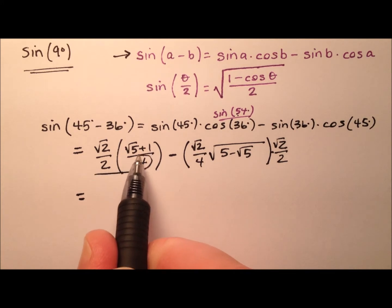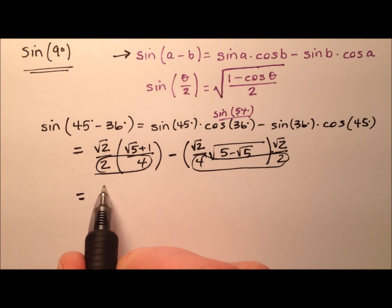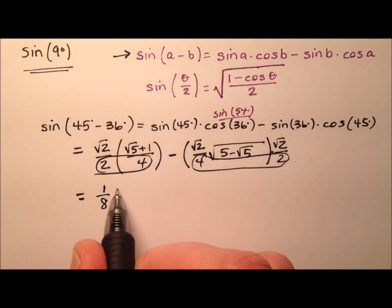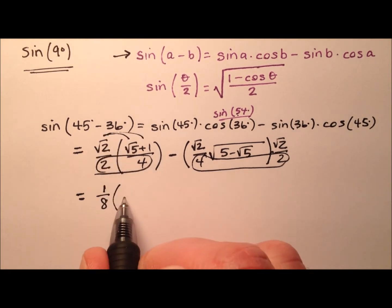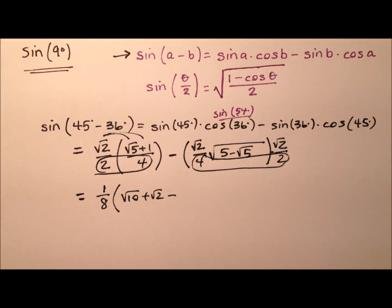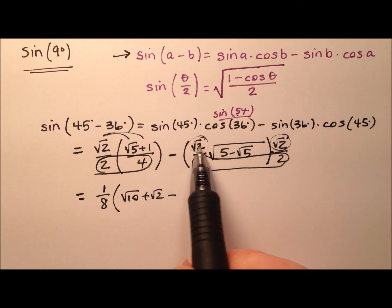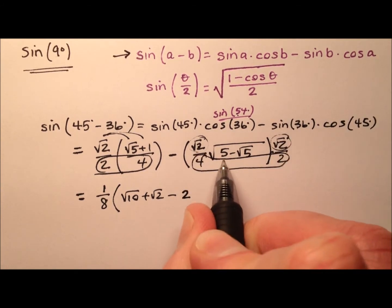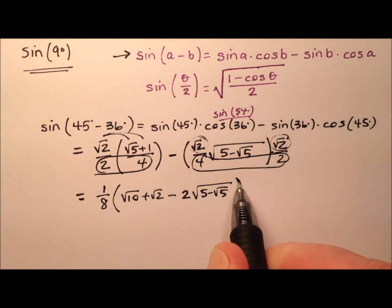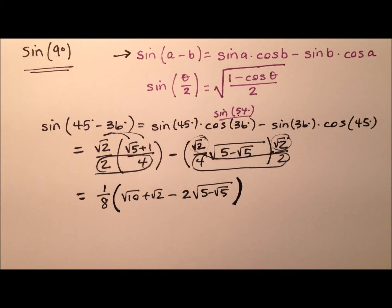The denominator here looks like 8, and also the denominator here looks like 8. So I'm going to pull a 1/8 out of both of those. When I distribute that through, it looks like the square root of 10 plus the square root of 2 minus, and here the square root of 2 times the square root of 2 makes 2, and then this radical just comes along for the ride. So we could write it this way, and this is one way to write this.